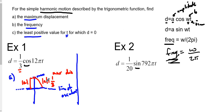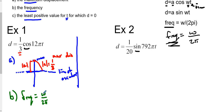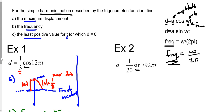For part B, what is our frequency of this wave? Frequency equals W over 2π. In this case our W is 12π, so we have 12π over 2π, and our frequency is 6. That's our frequency.